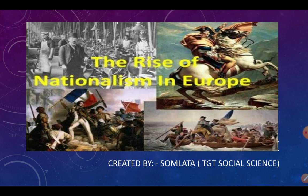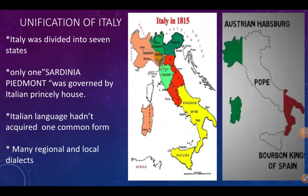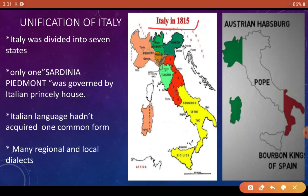First let us see the physical features of Italy. Here you can see the map — how colorful it was — and this is the map of 1815. You can see how many small states there are. This is the northern part of Italy and it was ruled by the Austrian Habsburgs. Austria, whose ruler was Metternich. Yes, Metternich was the same person we discussed earlier. His famous quote — when France sneezes the whole Europe catches the cold.